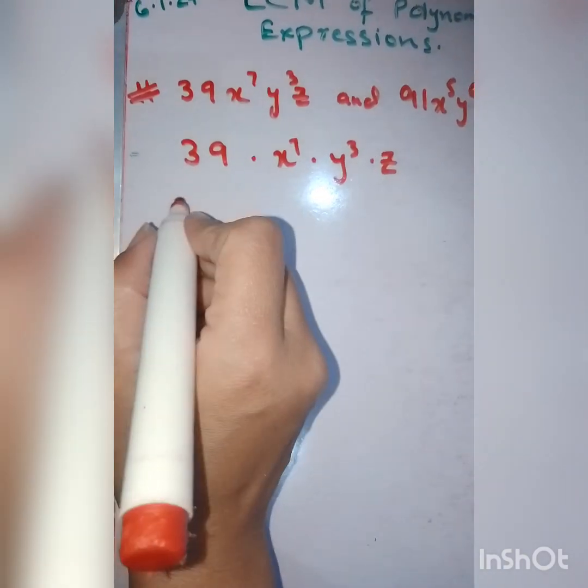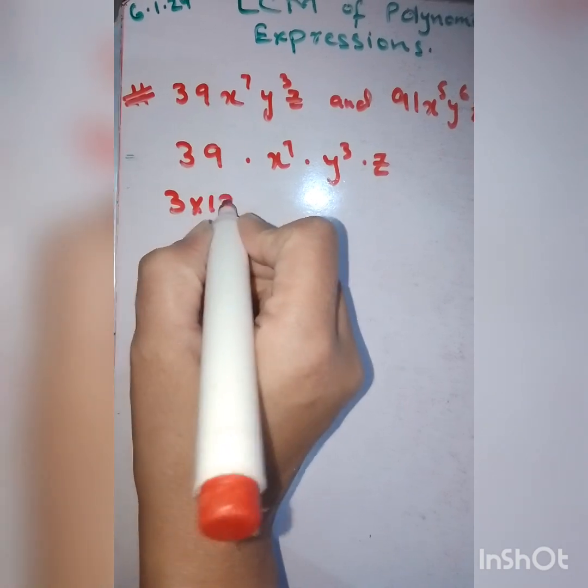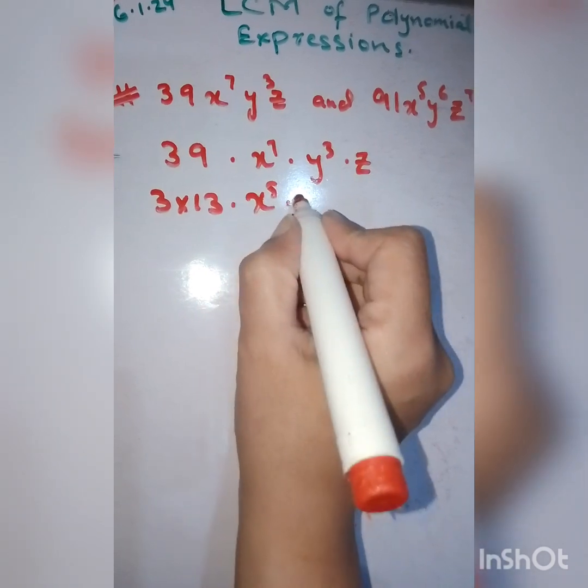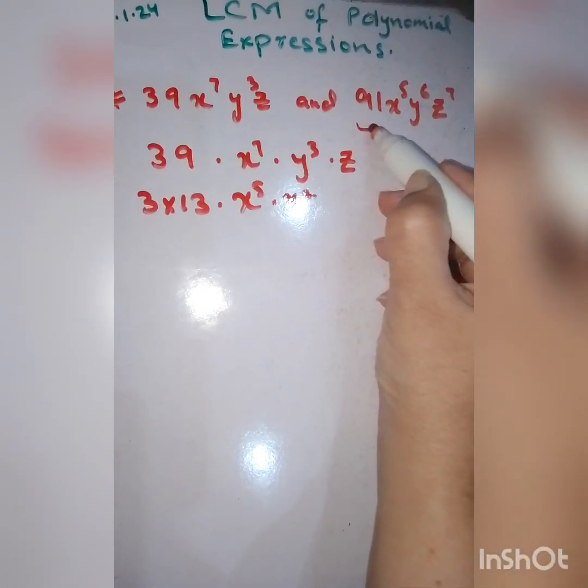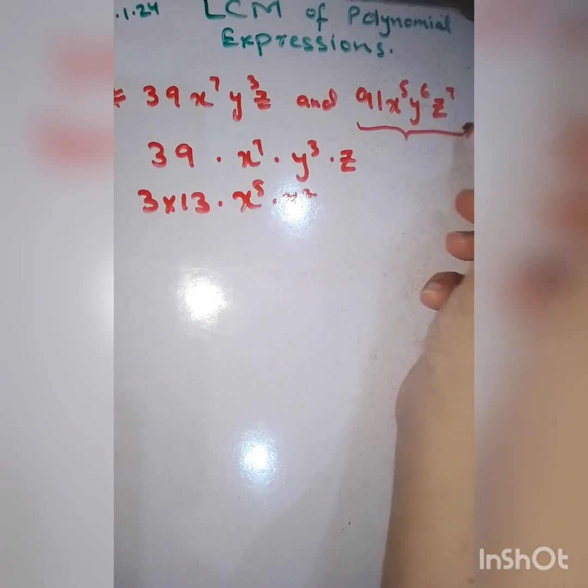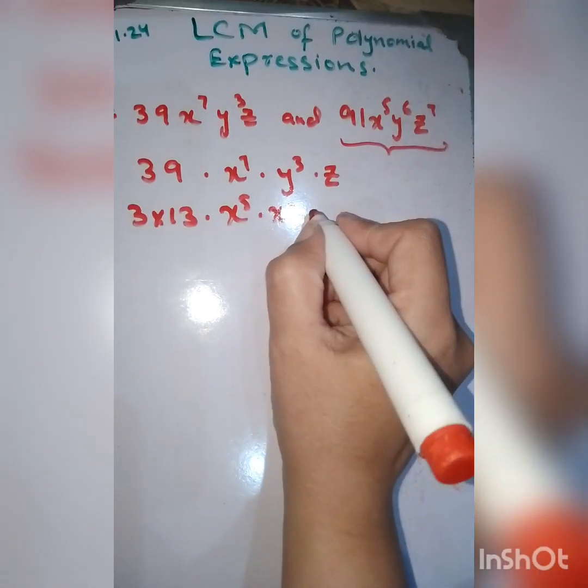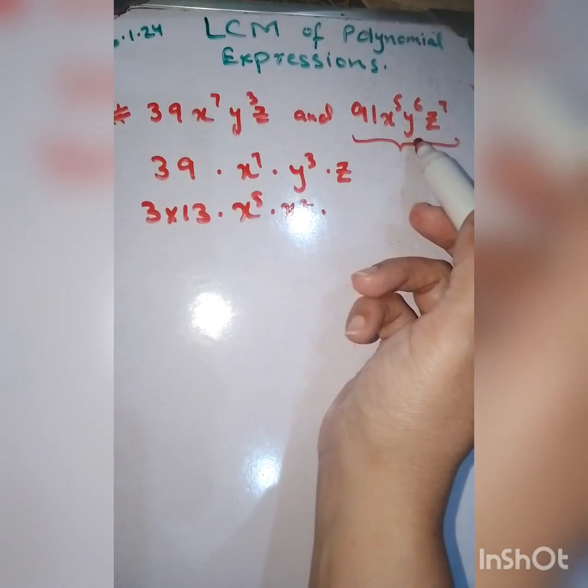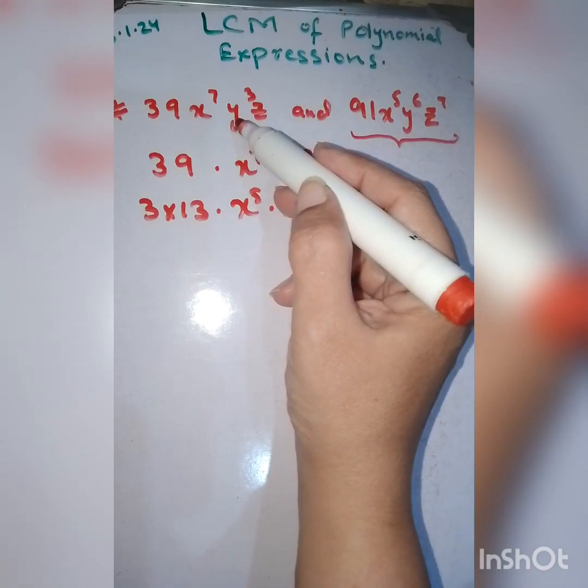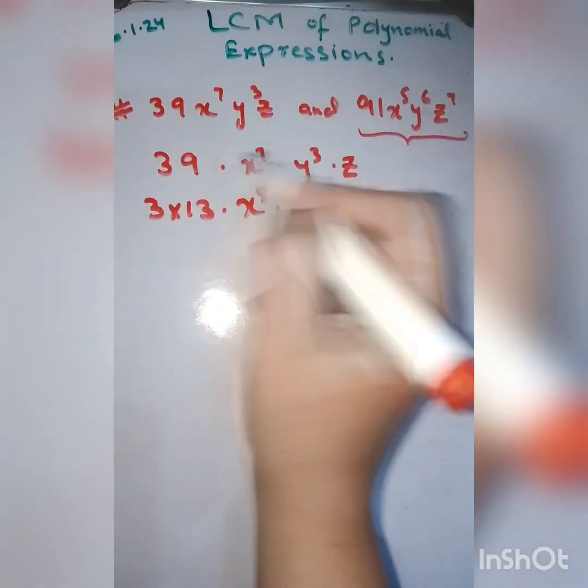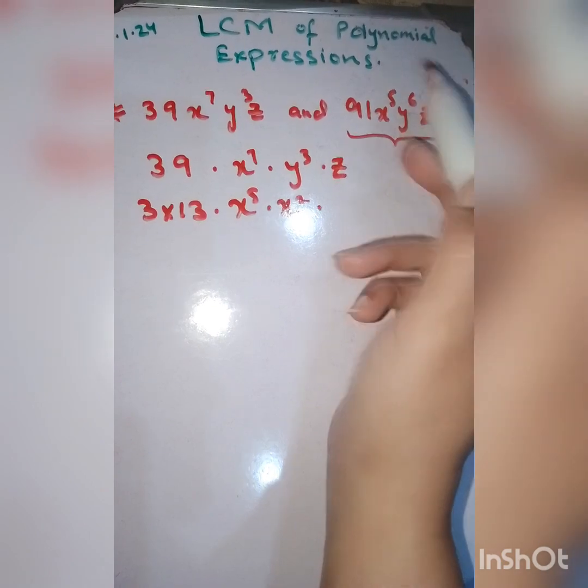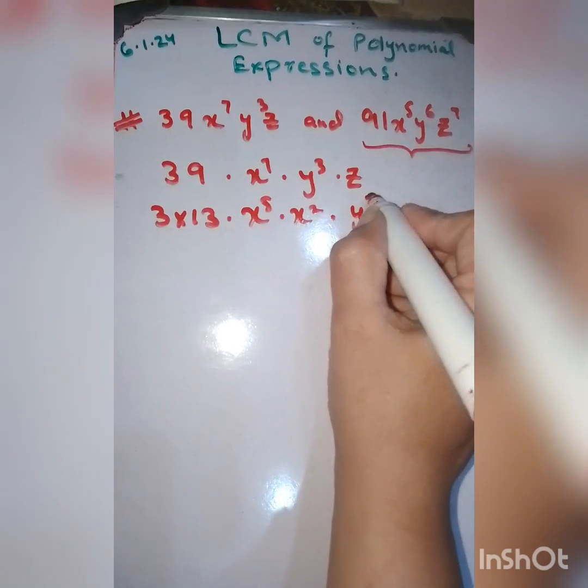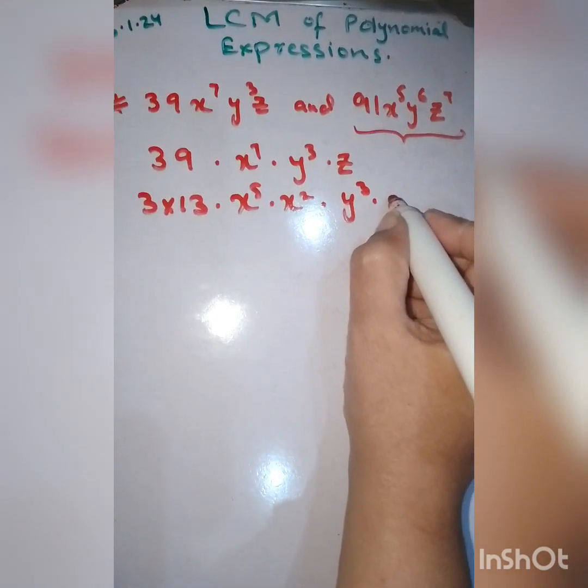Simplify it into different factors. 39 is 3 times 13. x^7 will be x^5 and x^2. You have to keep in mind that you have to work looking at the second term because we have to compare these two terms in the end. They are interconnected. y^3 is here and y^6 there, so I'm going to leave y^3 as it is, and z can be written as single z.